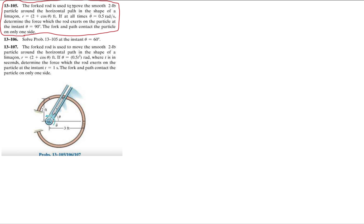There's a rod that's used to move the smooth two-pound particle around the horizontal path in the shape of a limacon. They give us the position equation, so 2 plus cosine theta. If at all times theta dot is 0.5 radians per second, determine the force which the rod exerts on the particle at the instant theta equals 90 degrees, which is also pi over 2. The fork and the path contact the particle only on one side.